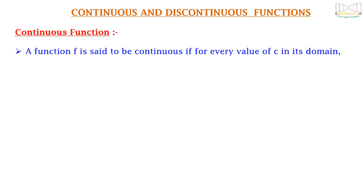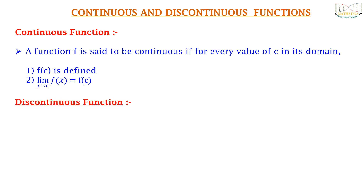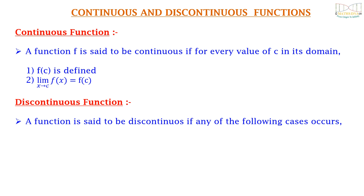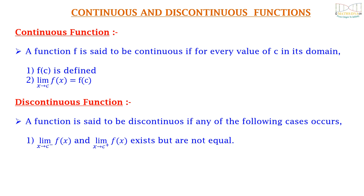Let us study with proper definitions what we mean by continuous and discontinuous functions. A function f is said to be continuous if for every value of c in its domain: first, f(c) is defined, and second, the limit as x tends to c of f(x) equals f(c). A function is said to be discontinuous if any of the following cases occur. First, the left-hand limit and right-hand limit exist but are not equal.